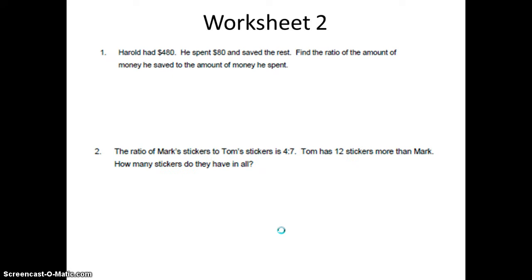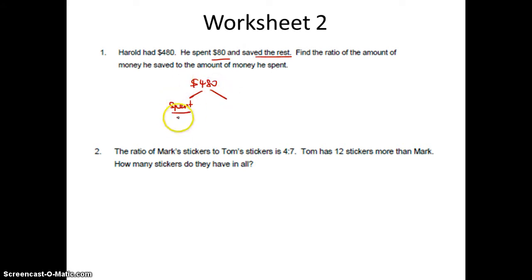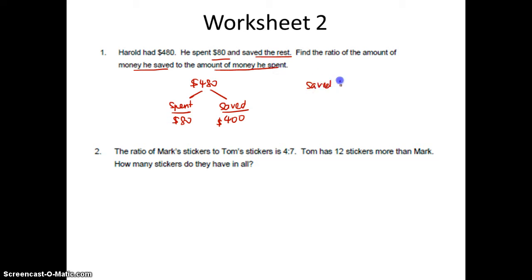Worksheet 2. Herod had $480. He spent $80 and saved the rest. So I know Herod at first had $480, he spent $80, he would save $400. Find the ratio of the amount he saved to the amount he spent. So saved is to spent: $400 is to $80. Answer is 5 is to 1.